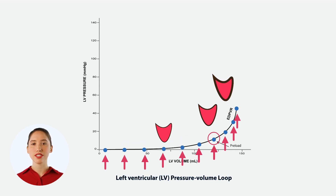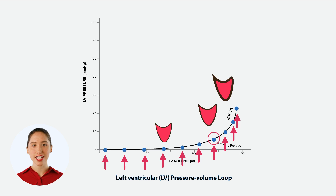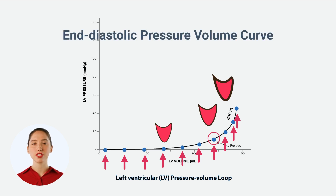Measure the pressure and the volume every time you remove or add volume, connect the dots, and you get what we call the left ventricle end diastolic pressure volume curve.